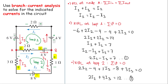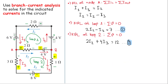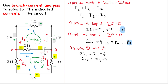We now have two equations and two unknowns. Let's clean up and solve equations one and two using elimination. Rewriting: equation one is 2i2 minus i3 equals 7, and equation two is 2i2 plus 4i3 equals 12. Subtracting to eliminate 2i2 gives minus 5i3 equals minus 5, so i3 equals 1 ampere.